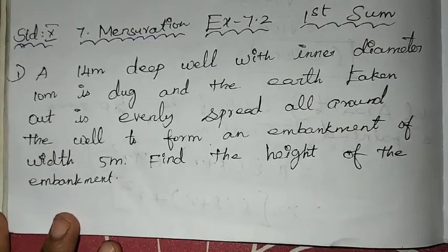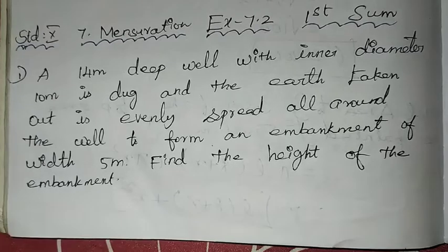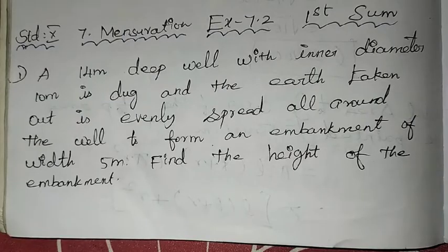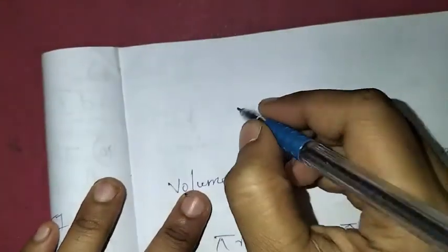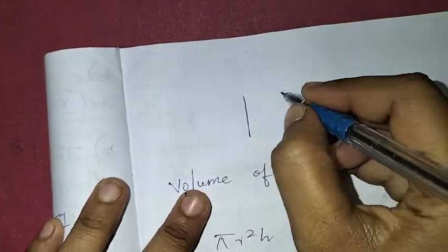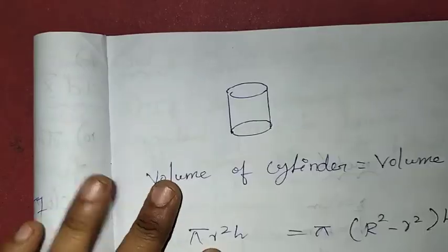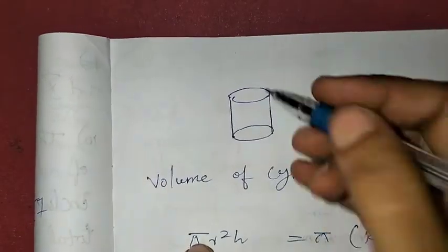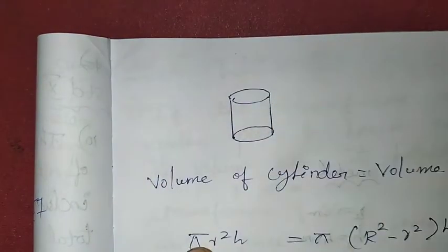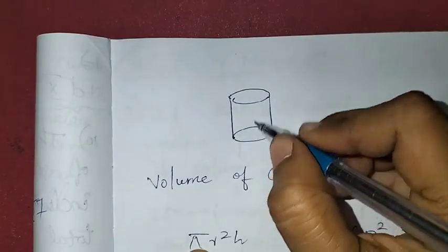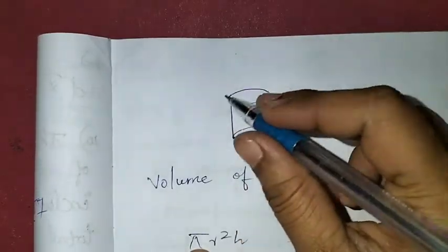That is a 14 meter deep well — a 14 meter high cylinder. If you know a cylinder, we know it is a cylinder shape. The well is a cylinder shape. The height of the well is 14 meters, so the cylinder height is 14 meters.